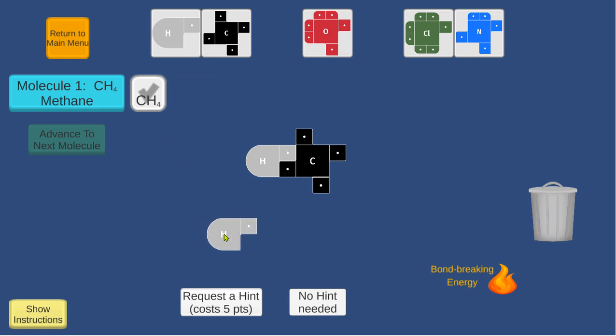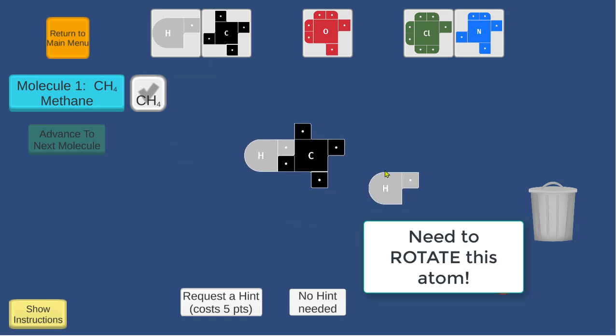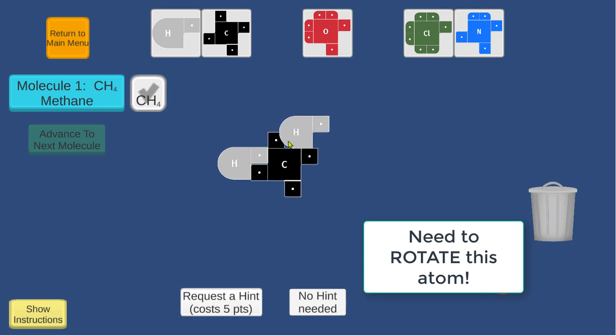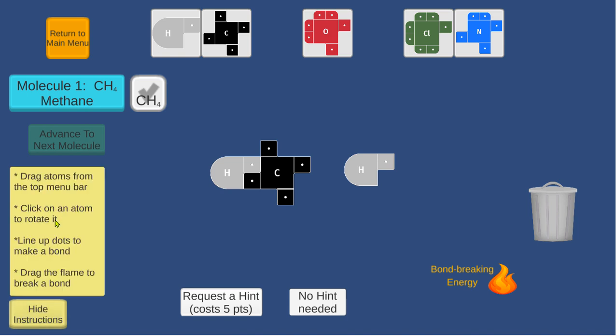If I bring out another hydrogen, I'll need to rotate it. You can see it doesn't go anywhere. I need to rotate. To rotate, here's in the instructions: click an atom to rotate it. Boom, boom. Now it lines up. Now it makes a bond.